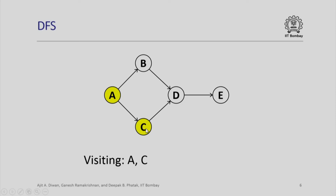After C, we continue the process and we will get D. After that, we continue the process and we will get E. After that we will have to backtrack because we have visited all these nodes. The only node unvisited is B, which will get visited in the next sequence, meaning the order of DFS traversal for this particular graph will be A, C, D, E, B.